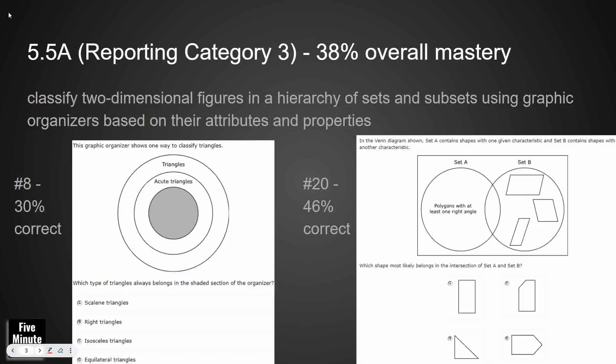I'm going to start with 5.5A, classifying 2D shapes, and this first one was a little bit tricky. 30% correct, and it's multiple choice. It's a Venn diagram, but most of the time we see Venn diagrams like this, they're supposed to find the overlapping area. But this could have bothered students because they've got a circle within a circle within a circle, knowing that this inner circle has to satisfy both acute triangles and triangles. My answer here is D, equilateral.